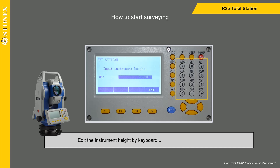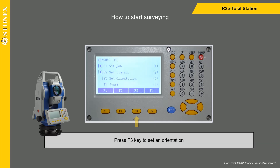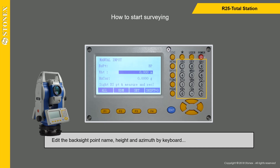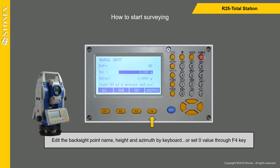Edit the instrument height by keyboard and press F4 key to confirm. Press F3 key to set an orientation. Press F1 key to select manual input. Edit the backside point name, height, and azimuth by keyboard, or set zero value through F4 key. Aim to the point and press F1 key to measure and confirm.